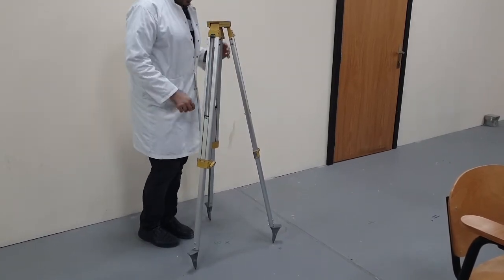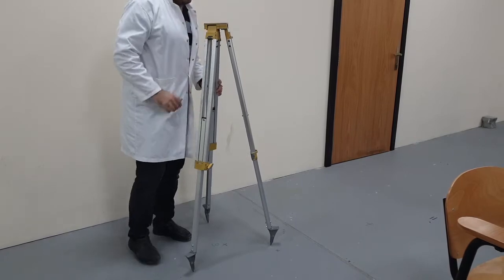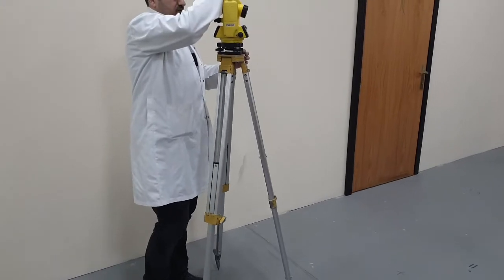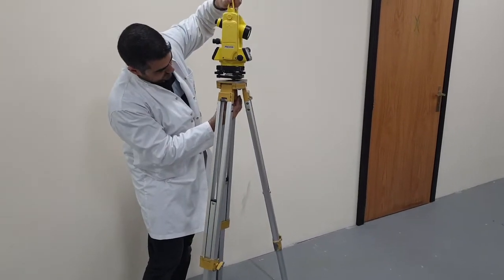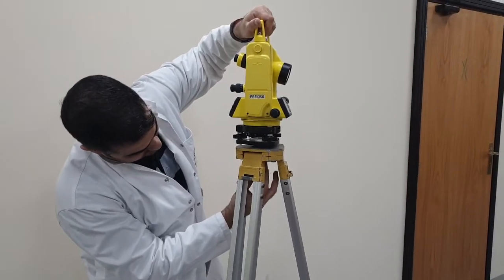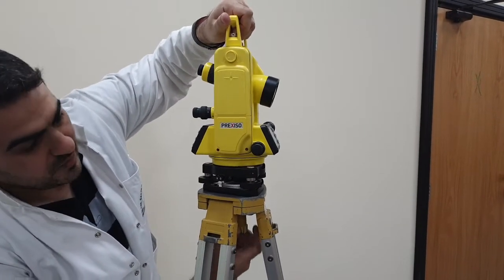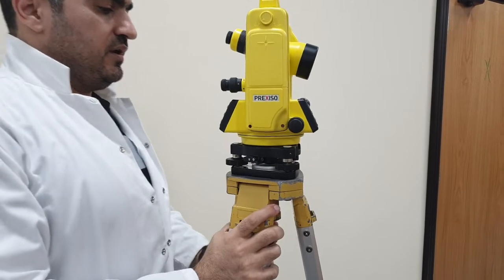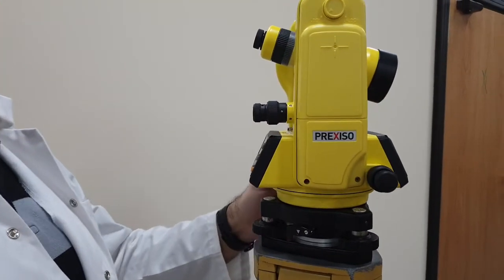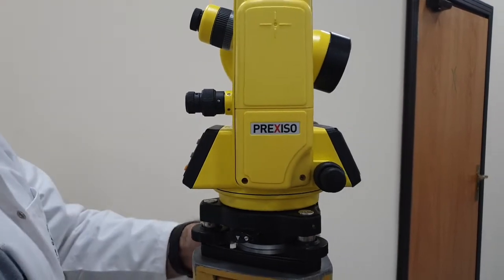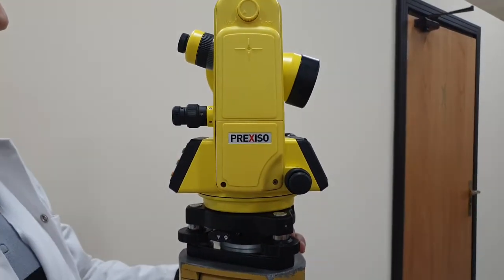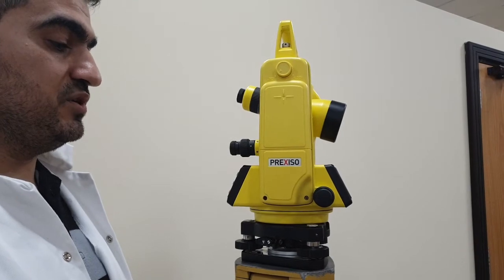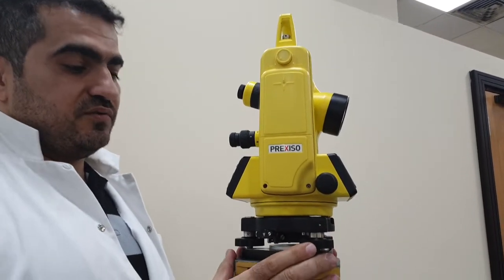Then we bring the device and we make sure that we lock it inside. Always make sure that you screw and lock your device to the tripod, otherwise it will fall easily if you for example hit the legs for any reason. You need to make sure that you don't hit the legs once you start your measurements.